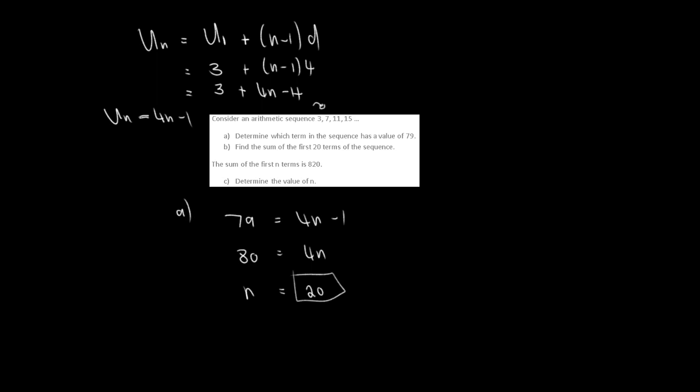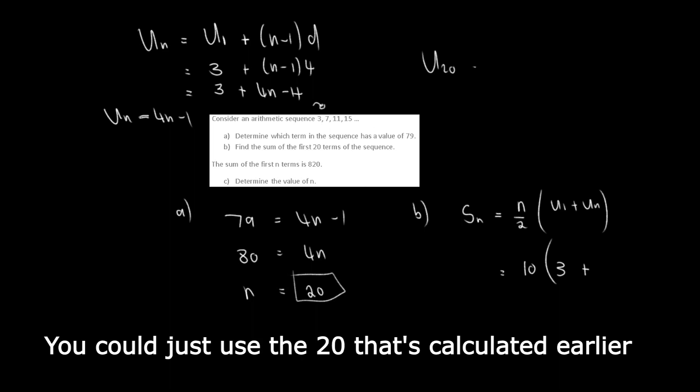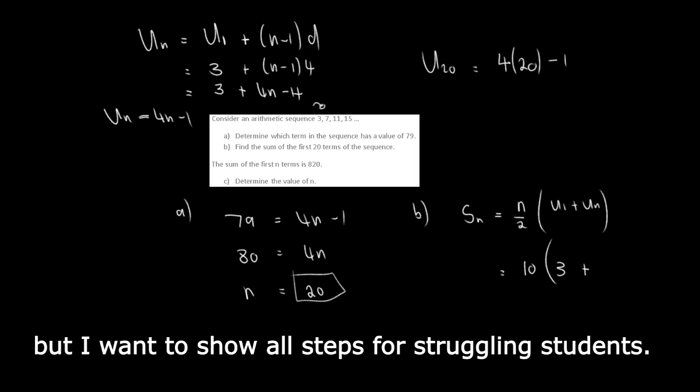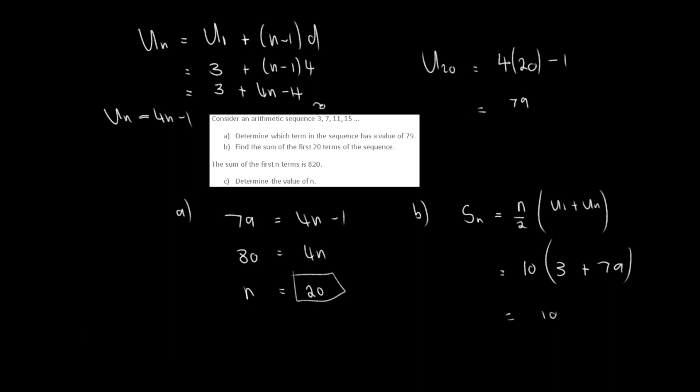What about B? Find the sum of the first 20 terms of the sequence. Now the sum of an arithmetic sequence is N over 2 U1 plus UN. So N in this case is 20. So 20 divided by 2 is 10. U1 is 3 plus UN, so I need to find U20. That gives me 4 times 20 minus 1, which is 79. So then we have 10 multiply 82. So the sum of the first 20 terms will be 820.